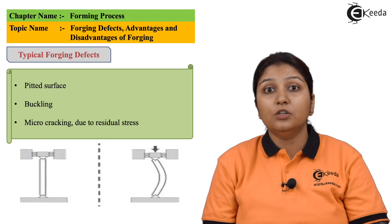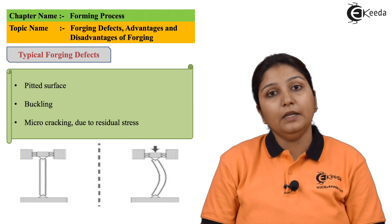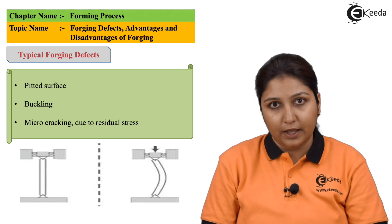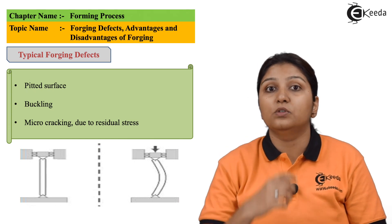You can see the longitudinal defect which is known as buckling. Buckling takes place in a longitudinal direction like during upset forging or any other forging in which you use a rod.